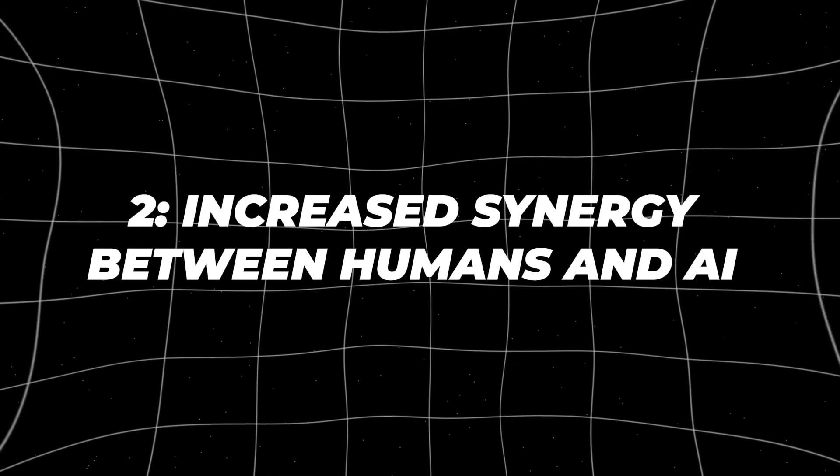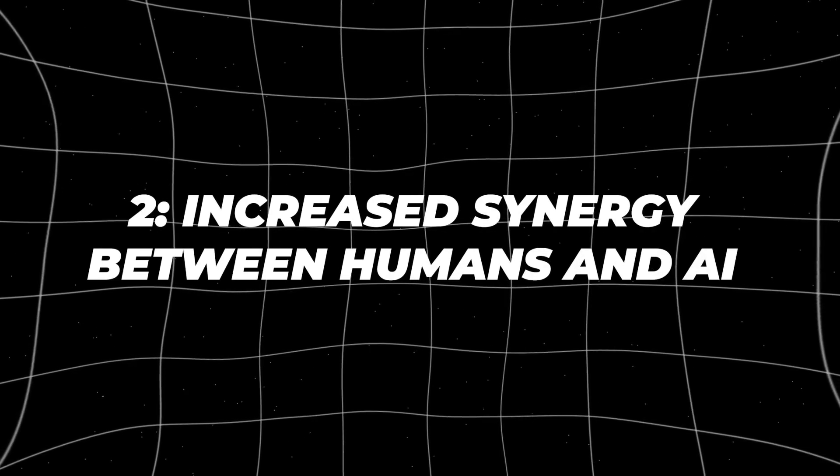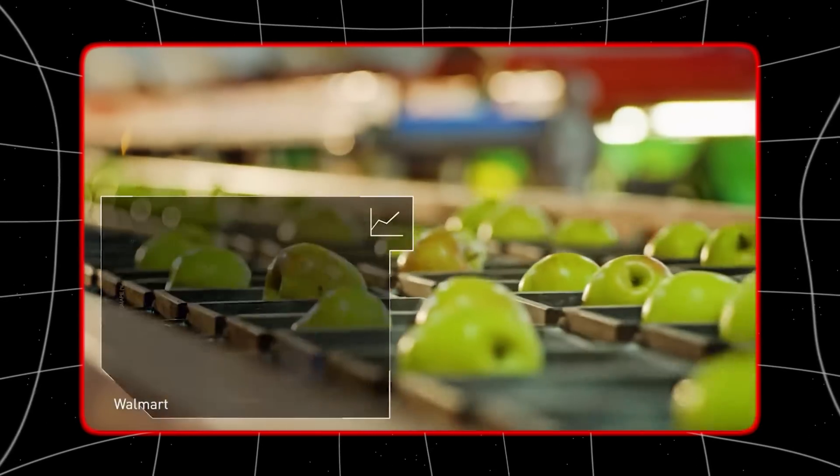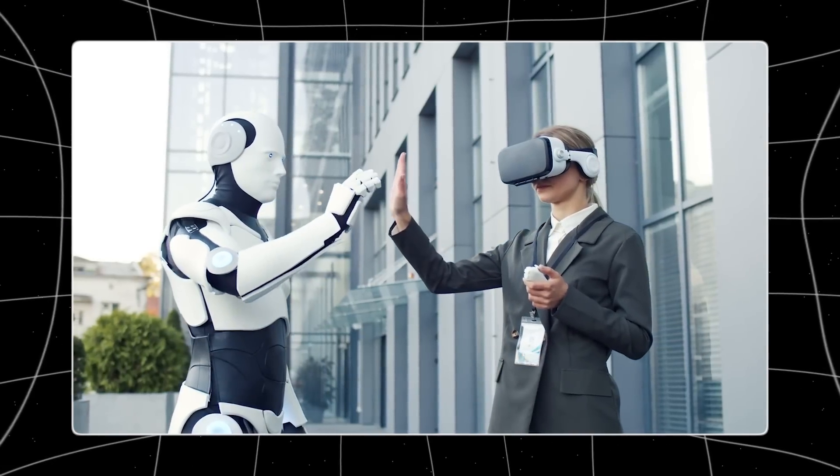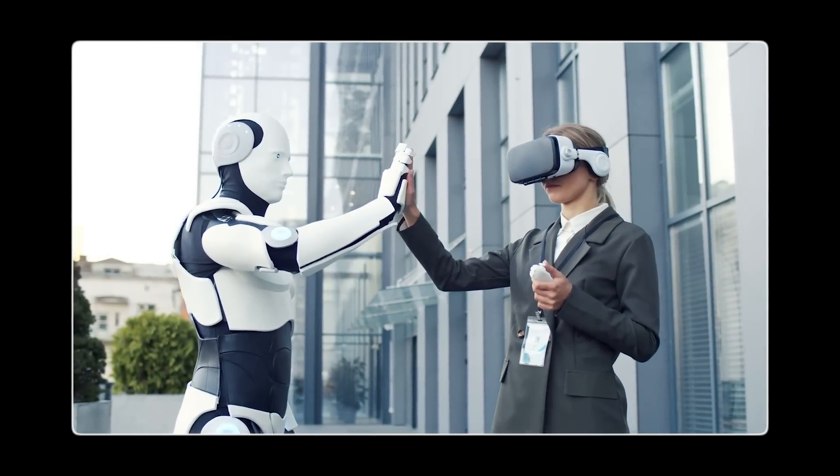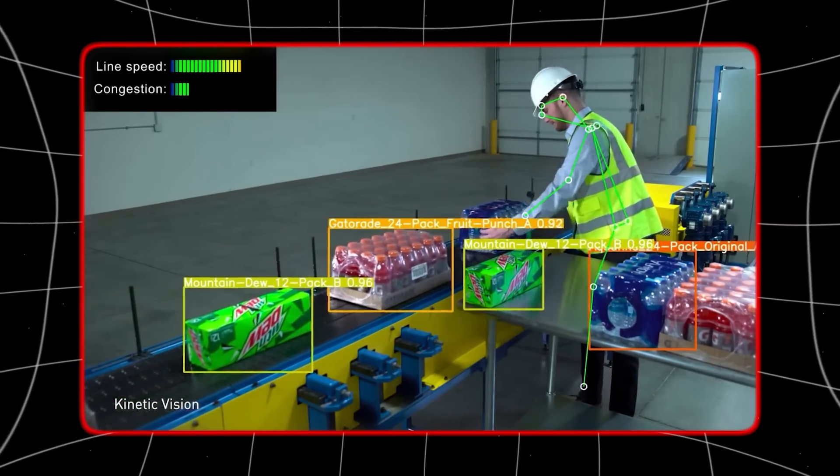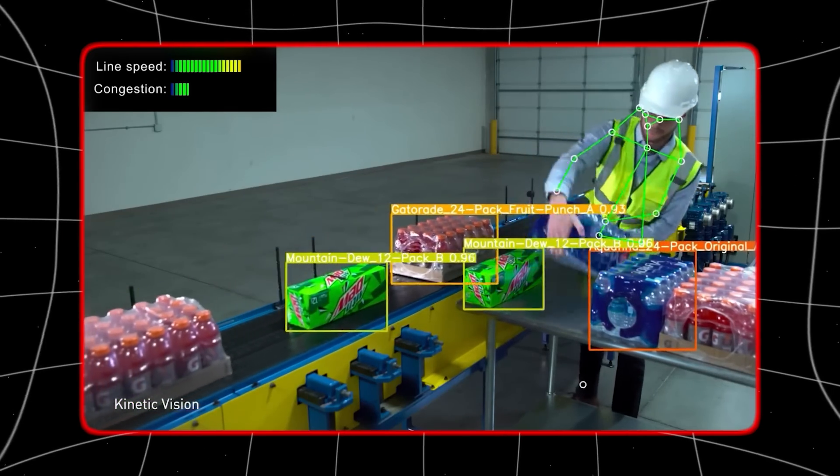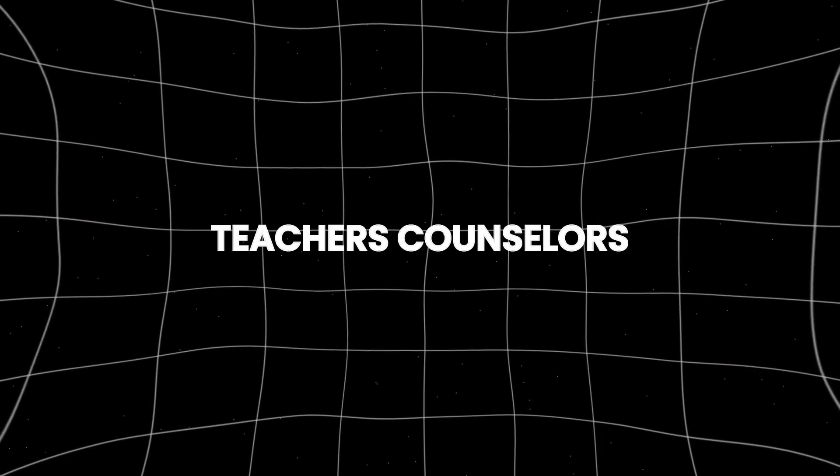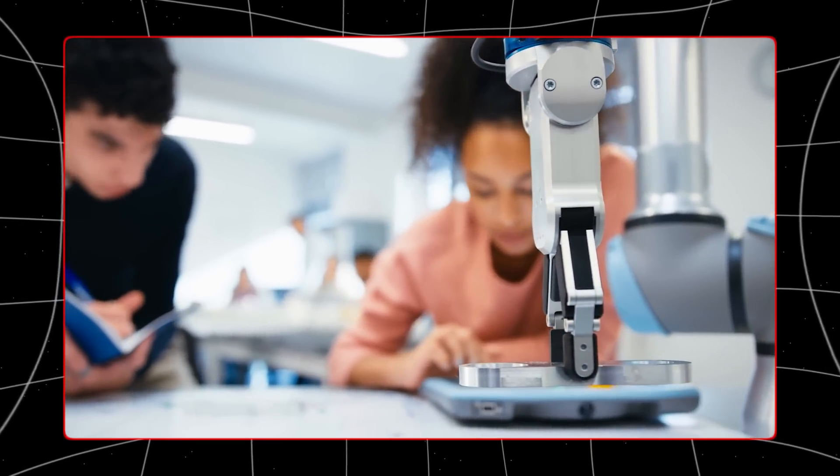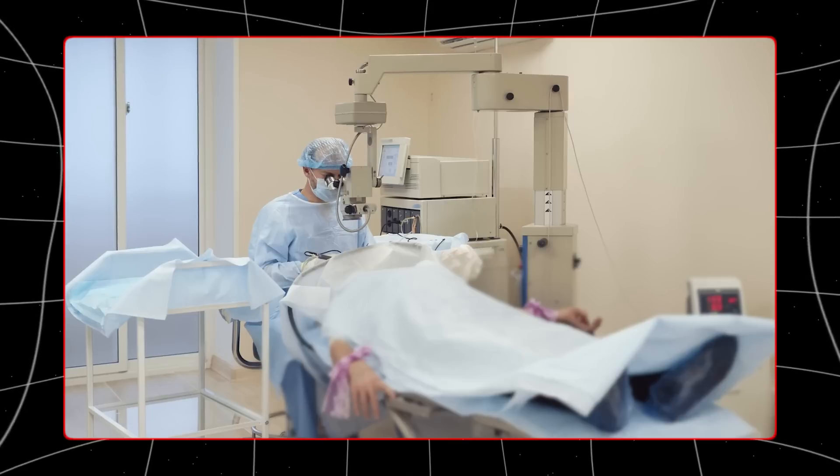Number two, increased synergy between humans and AI. By 2030, we can expect a significant boost in the teamwork between AI systems and people. This teamwork will change how we do our jobs and use technology every day. AI will grow beyond being just tools to serve as personal helpers, teachers, counselors, and even friends. This friendly collaboration will make humans better at what they do, encourage new ideas,